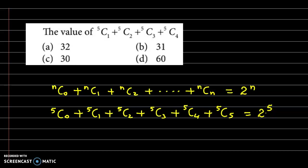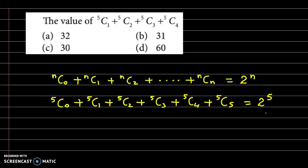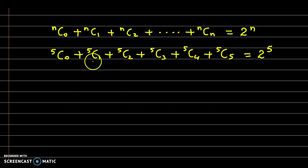But we need the value of 5C1 plus 5C2 plus 5C3 plus 5C4. These are the other terms, that is, 5C0 and 5C5. We transfer them to the right-hand side.